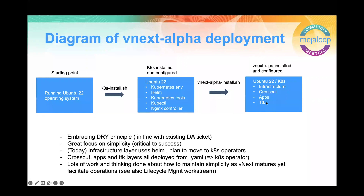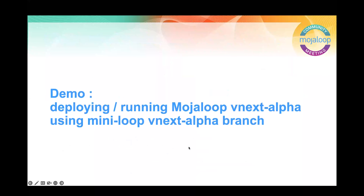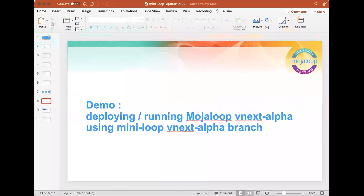The vnext deployment running on a 2C2 instance: you run the k8s install, then run the vnext install, and it installs each of these layers - the infrastructure layer, the cross-cutting layer, the applications, and then the TTK. I think I need to get on and give you a demo, so I'm going to share my screen.